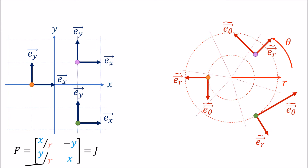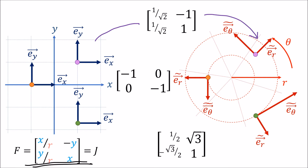So using this Jacobian matrix, we can get a different forward transform matrix for every single point in space that takes the Cartesian basis vectors and gives us the polar basis vectors. The Jacobian is sort of like a master forward transform that works everywhere in space — we just pick a point, substitute the coordinates of that point into the Jacobian matrix, and we have the forward transform matrix for that point.